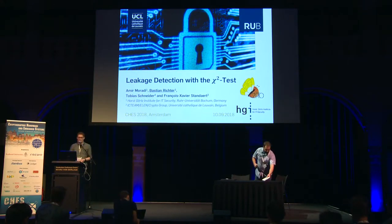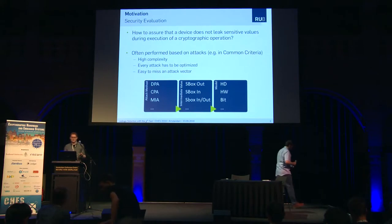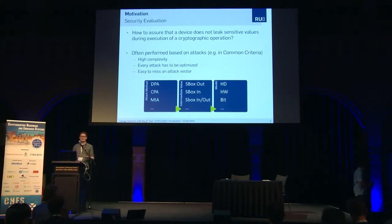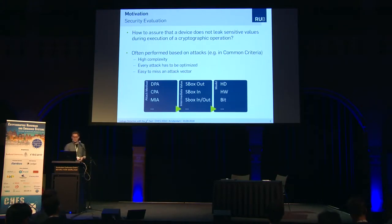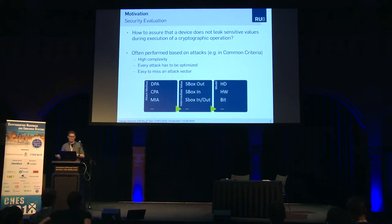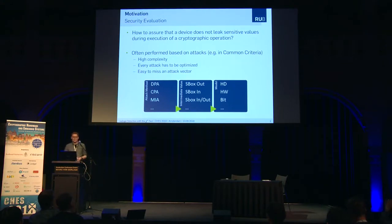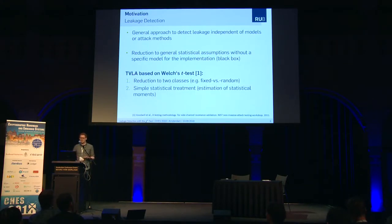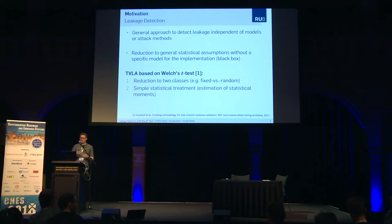Thank you, Colin. When we perform security evaluations, we want to assure that a device does not leak sensitive information — a sensitive value — during the execution of cryptographic operations. Often these tests are performed based on attacks, for example in Common Criteria, but these have the downside of high complexity: you have to choose the method, the intermediate values, and the models, and every attack has to be optimized, so it's easy to miss an attack vector. There's also the approach of leakage detection, which tries to use general statistical assumptions to get independent of models or attack methods.